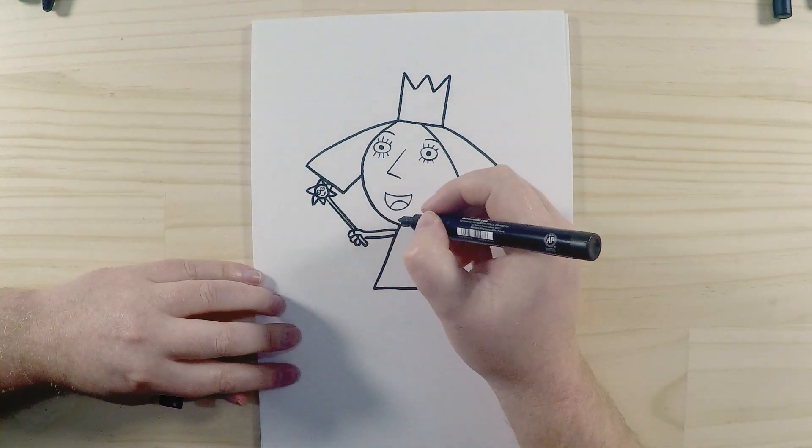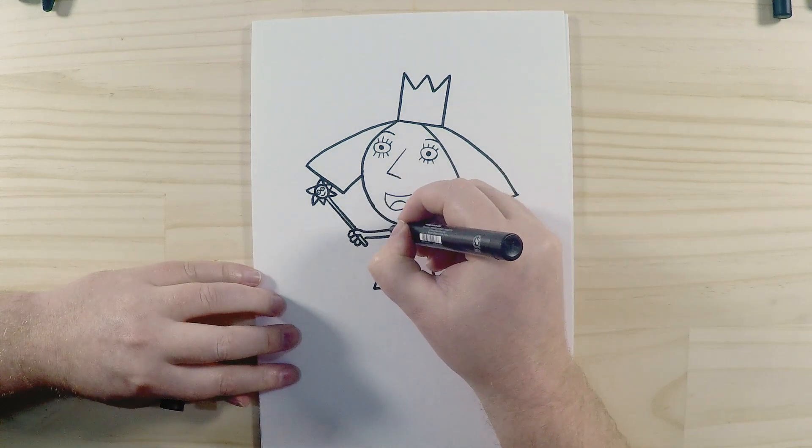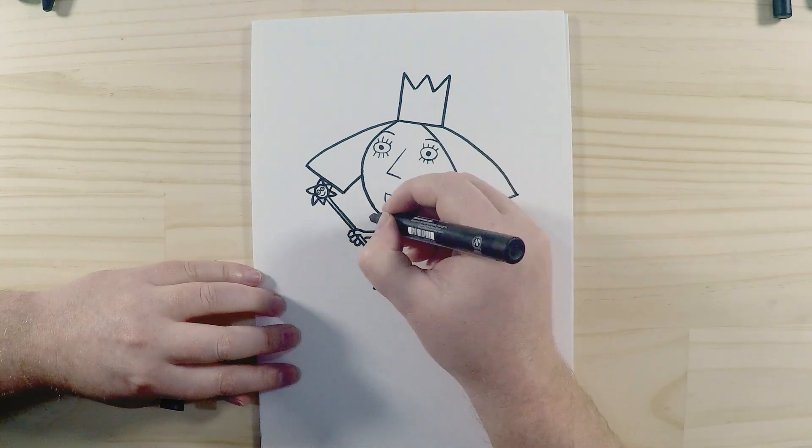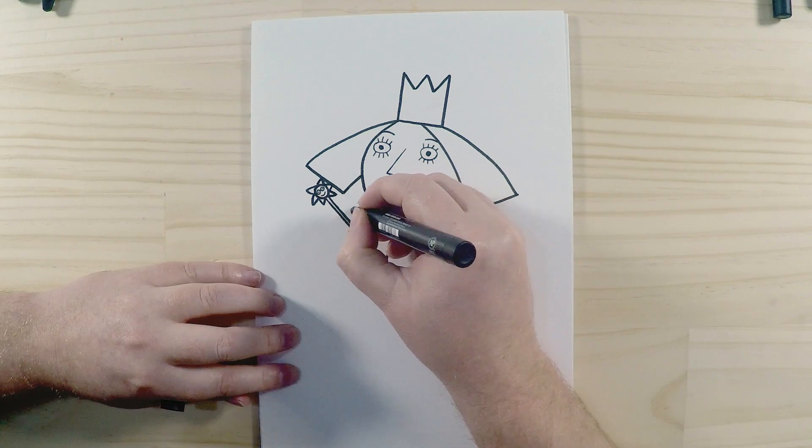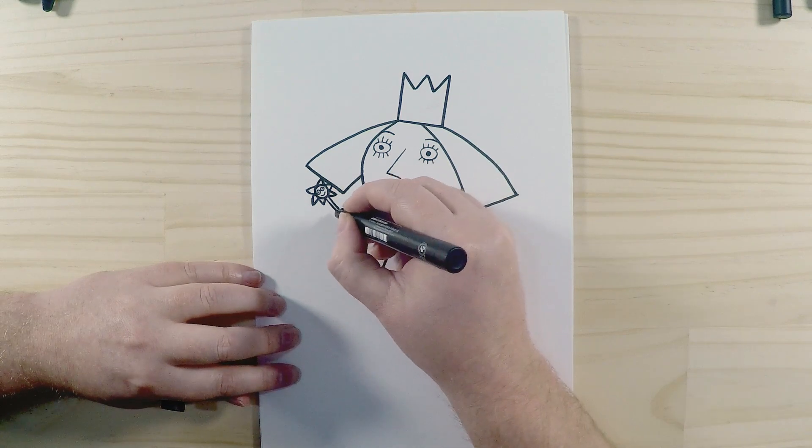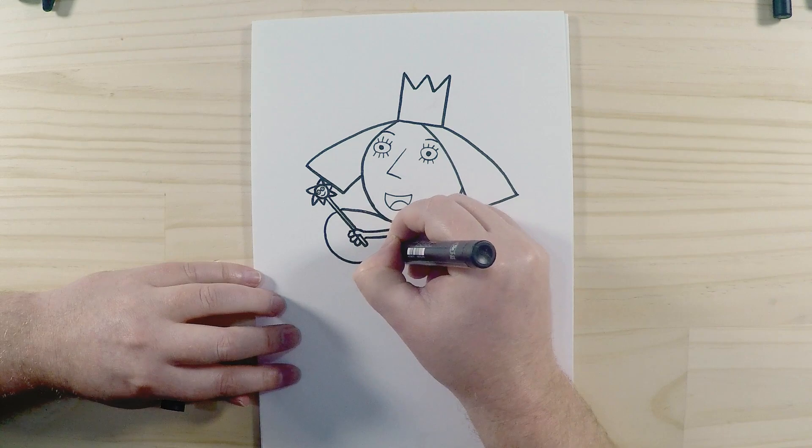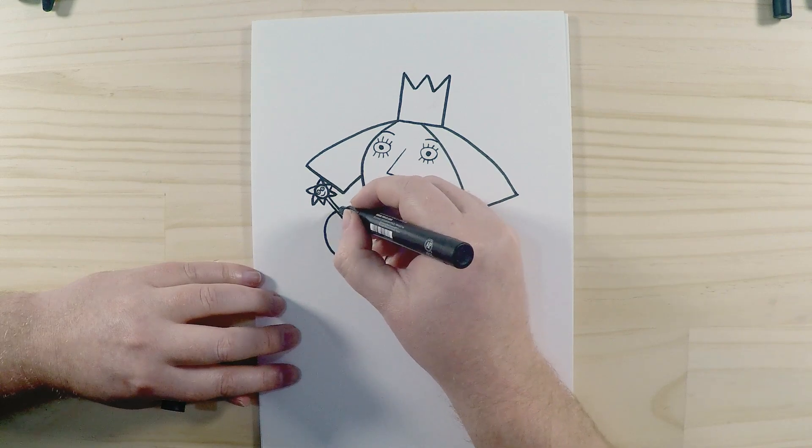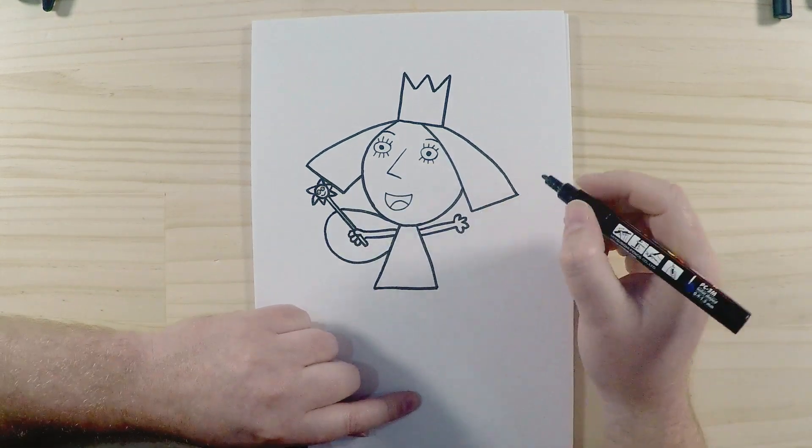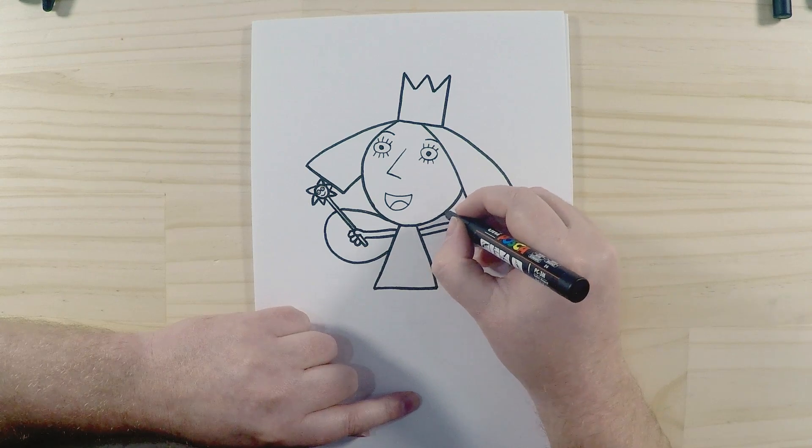All right, now behind that she's got her fairy wings, so we'll draw that. Let's start it from here. It curves around like that, so it goes behind her wand. We draw the same on the other side here as well, nice big curve just like that.